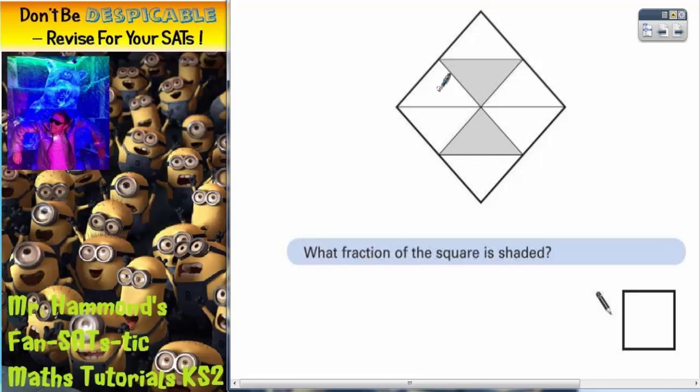We need to count the number of triangles: 1, 2, 3, 4, 5, 6, 7, 8. So it's going to be out of 8, and there are 1, 2 of them which are shaded. So it's 2 out of 8.